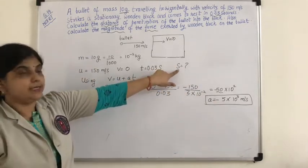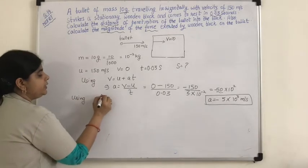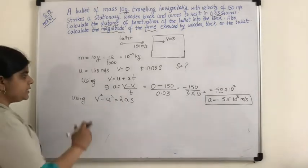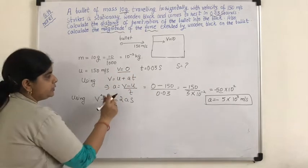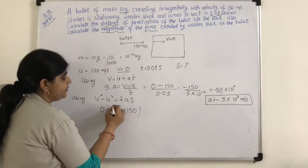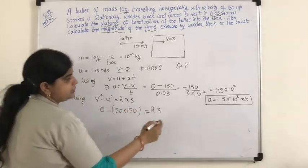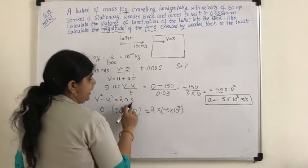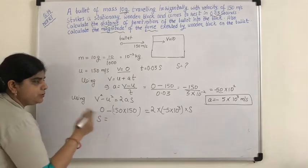What has been asked in the question? Distance. For distance, I will use the formula V squared minus U squared equals 2AS. This S I need to find out. Substituting: V is 0, so 0 minus U squared. U is 150, so 150 multiplied by 150 equals 2 into acceleration. Acceleration is minus 5 into 10 to the power of 3, into S. S has to be found out.